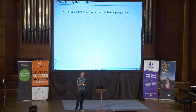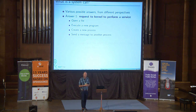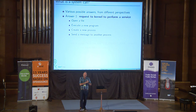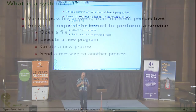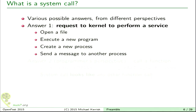One of the things strace does is watch the system calls that a process makes. What is a system call? One answer is it's a request to the kernel to do something on behalf of a program — things like opening a file, starting a new program, or creating a new process. There are various kinds of requests you can make to the kernel to do something on your behalf as a program.